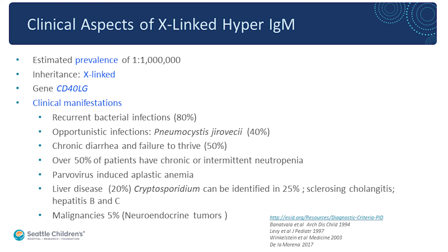Diarrhea, failure to thrive, and infection by the opportunistic organism cryptosporidium can cause significant disease. Cryptosporidium is thought to be an important contributor — though probably not the only one — to liver disease and complications including sclerosing cholangitis. In about 5% of patients you will see development of malignancies. What is unique is rare neuroendocrine, small slow-growing tumors seen in patients with the X-linked form, and why that occurs is not well understood.